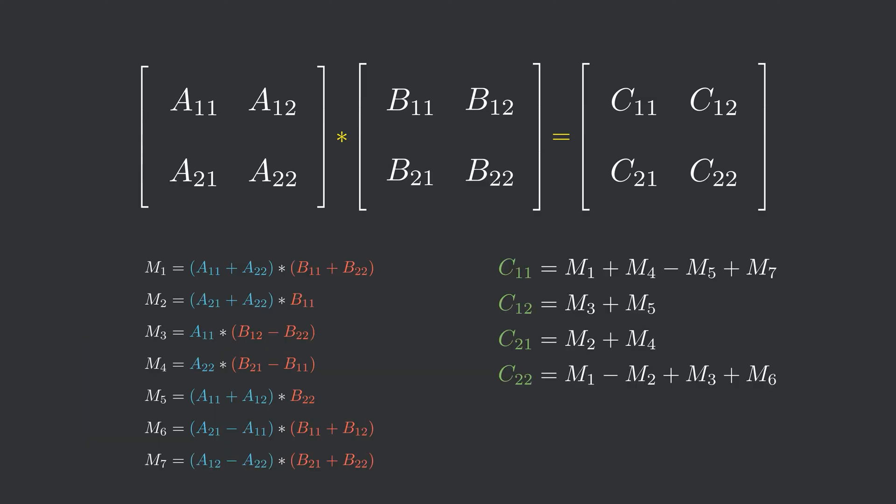Now, in this way, the multiplications have surely been reduced to 7, but additions and subtractions have been increased. These operations are significantly less computationally expensive than multiplication operations, so it does not contribute much to the overall complexity.